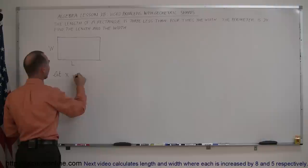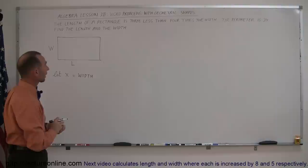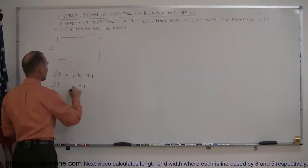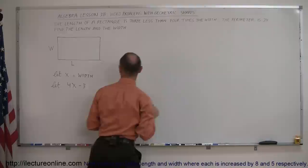Then how do we express the length in terms of x? Well, it says here that it's 3 less than 4 times the width. So let 3 less, that's minus 3, than 4x. So this is 4 times the width minus 3, which means 3 less than 4 times the width, and that will represent the length.